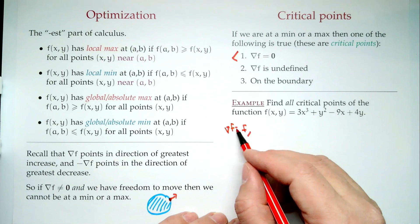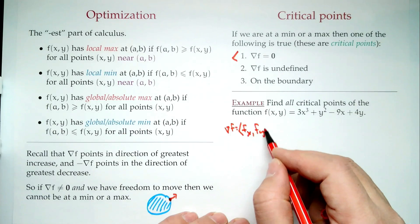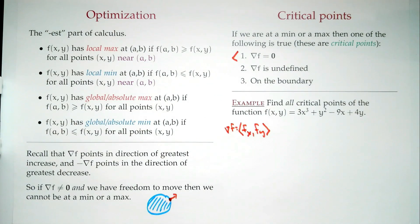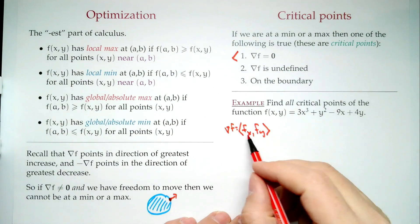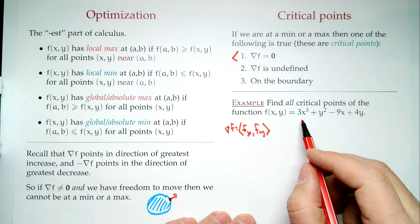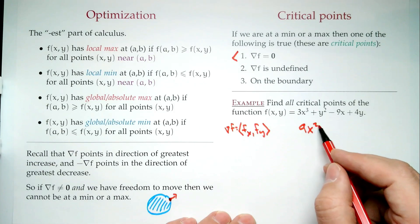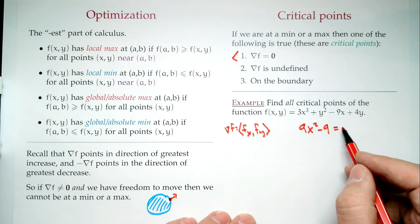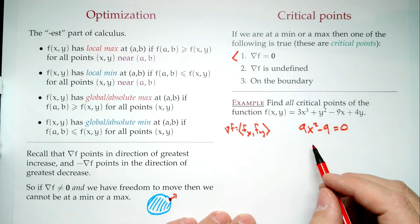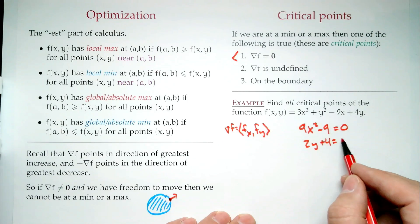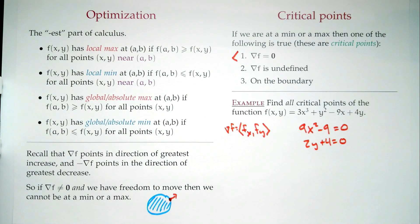The gradient is shorthand for (f_x, f_y). When we talk about the gradient being zero, it means all partial derivatives are zero — which also means the tangent plane is flat. So when looking for critical points, we set the partial derivatives to zero: f_x = 9x² - 9 = 0, and f_y = 2y + 4 = 0.